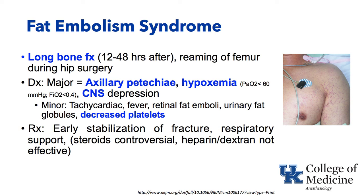The patient can often be hypoxemic and have CNS depression. Minor criteria include tachycardia and fever. Looking in the back of their eye, sometimes you can see fat emboli, or fine fat globules in their urine, and thrombocytopenia may be associated. Stabilize those fractures early so they stop releasing the fat emboli. Respiratory support should be provided. Steroids are controversial, and heparin and dextran are not effective and were used in the past.